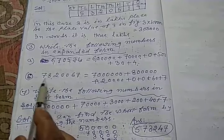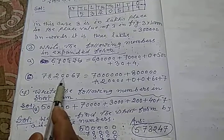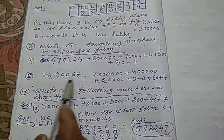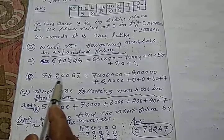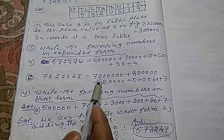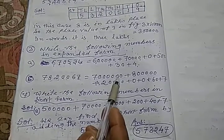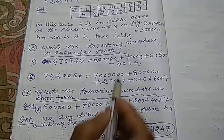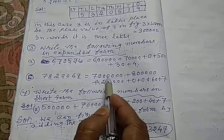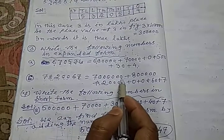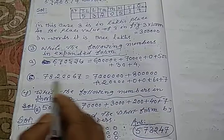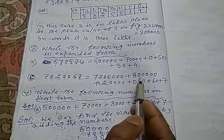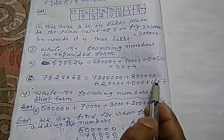Similarly, 7820067. Isko kaise expand karoge? Now, 7 ke baad kitna digit hai count kar lo? 1, 2, 3, 4, 5, 6. 7 ke baad 6, 0 likhu. 8 ke baad kitna digit hai? 1, 2, 3, 4, 5. Dekho, 1, 2, 3, 4, 5, 0 likhu.